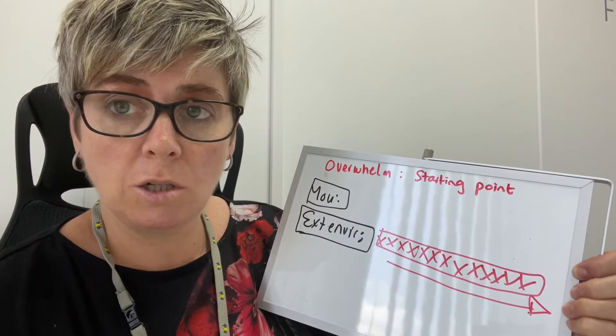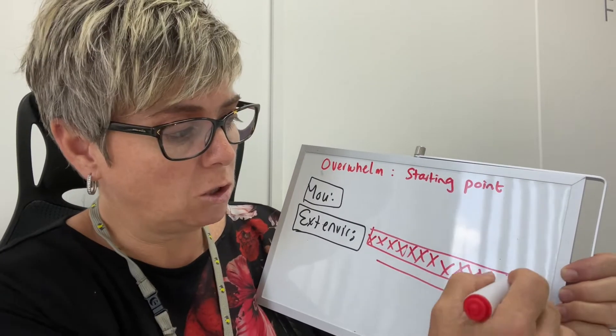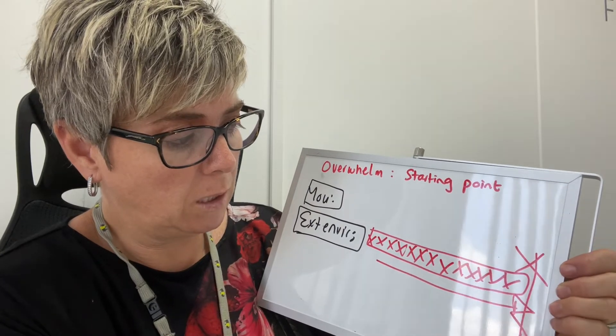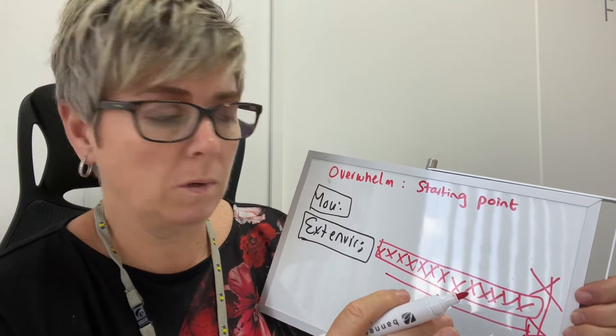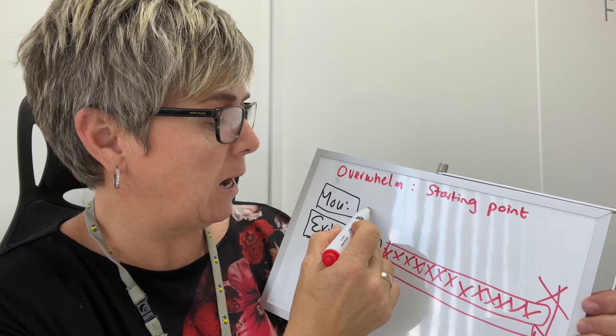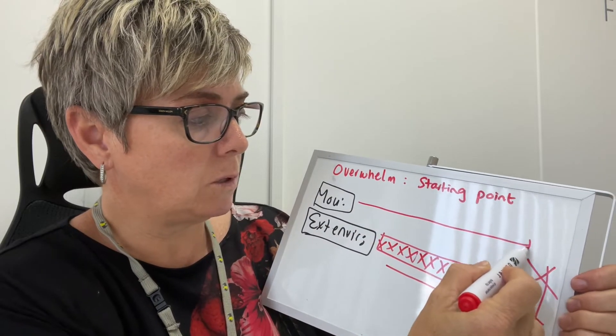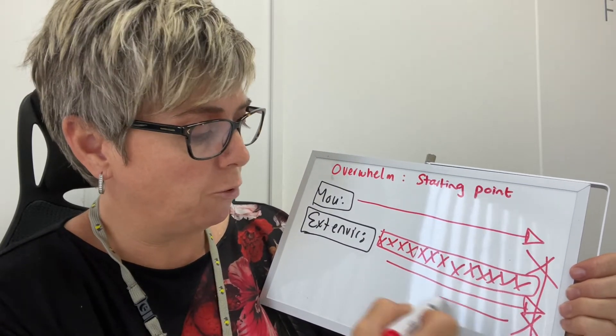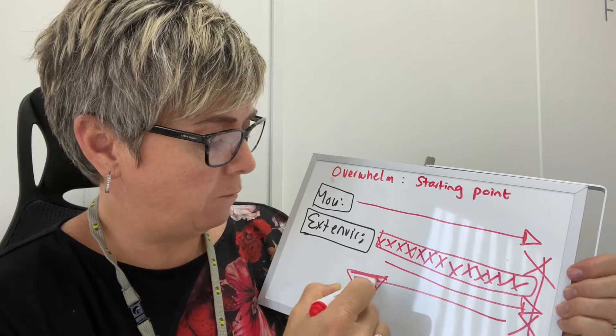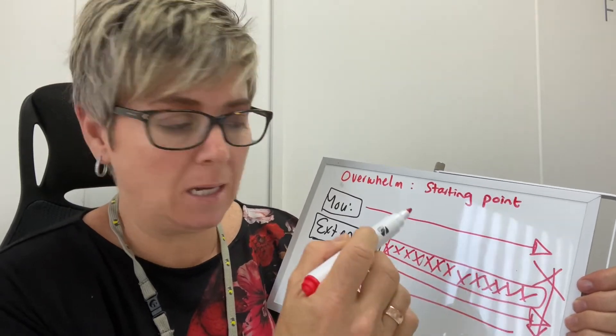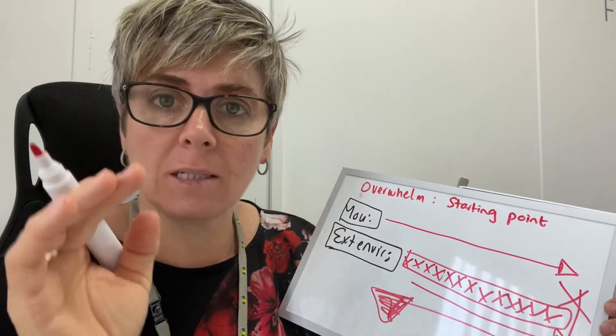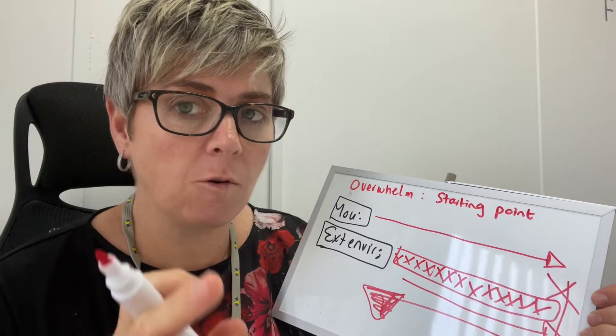What we need to do is stop it in its tracks and say no, no more. We need to allow the you to take control and bring back the environment. How we do that is by working out exactly when you start to become overwhelmed what it is.